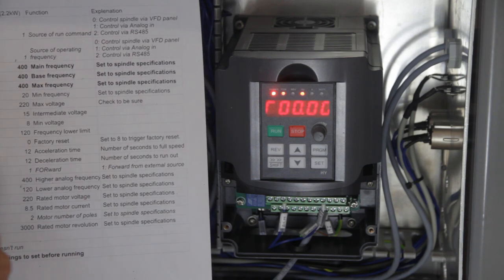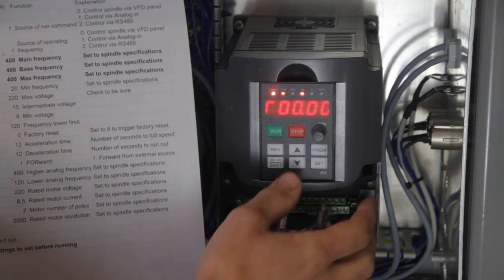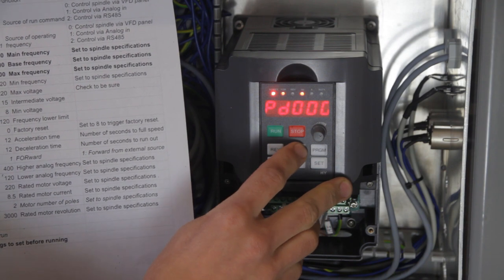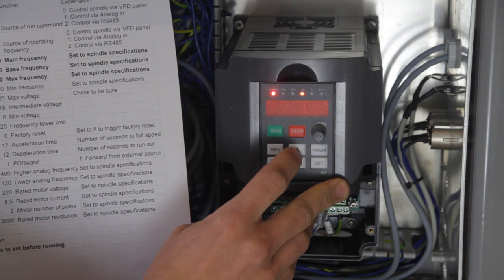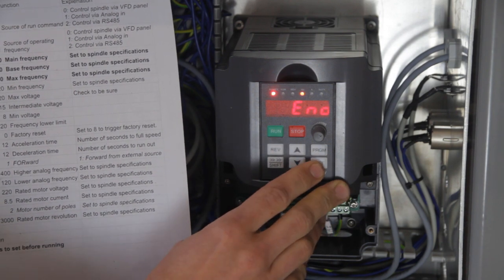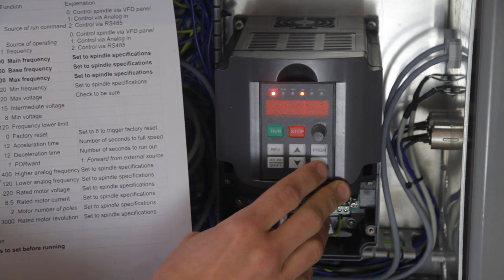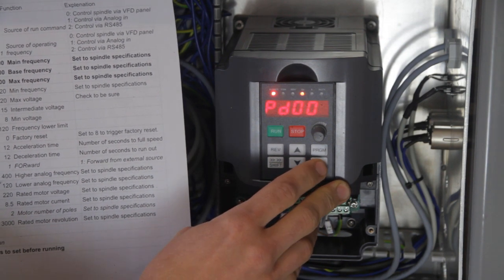So what is important here is most of these are set to spindle specifications. If you get any of these wrong, you can practically burn out your spindle. So I will press program. So just PD0, PD1, we need to set it to 1. Set. And PD2, we need to set it to 1. Set. PD3, we need to set it to 400.